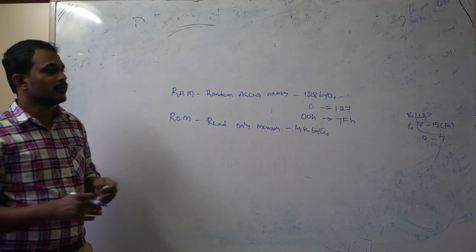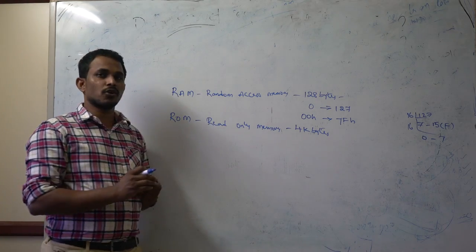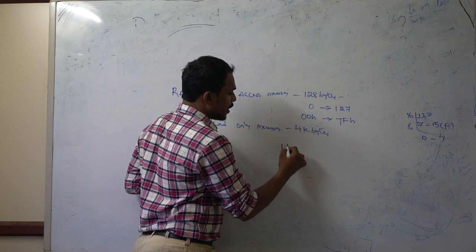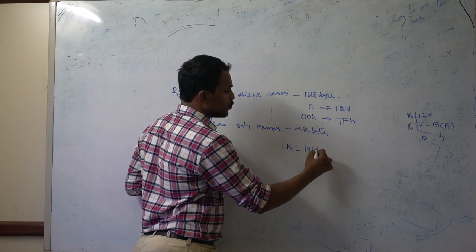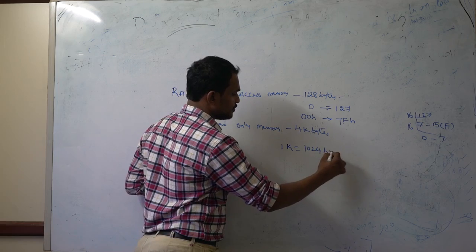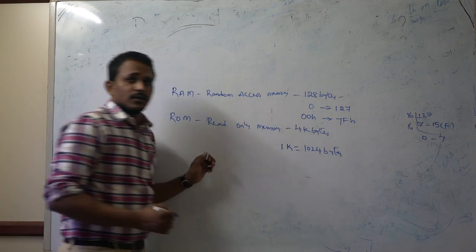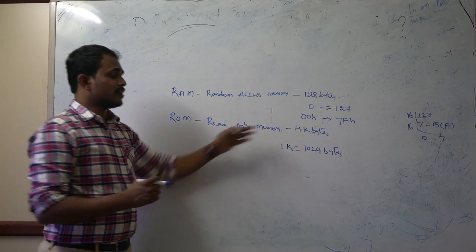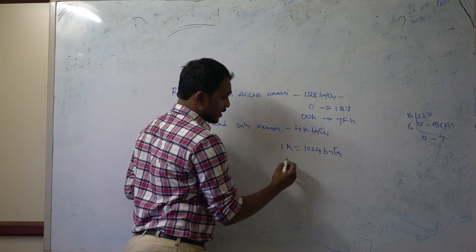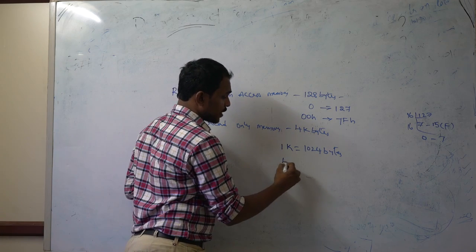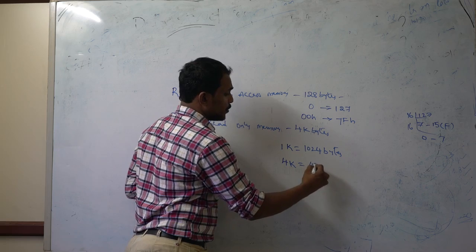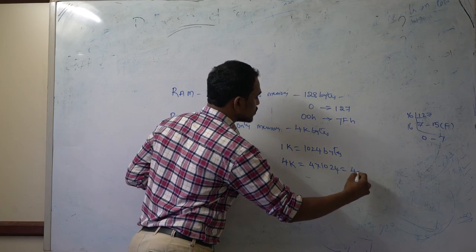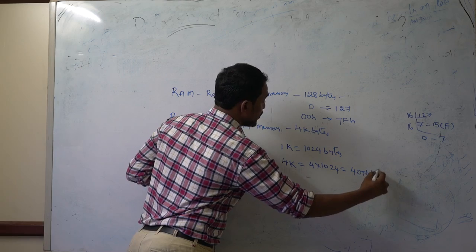For the ROM memory of 4KB, you need to calculate the addresses. One kilobyte equals 1024 bytes, so 4KB equals 4 multiplied by 1024, which gives 4096 bytes of ROM memory.